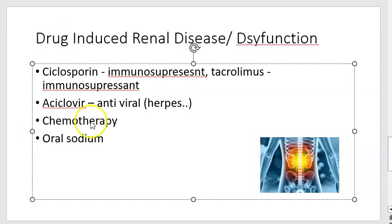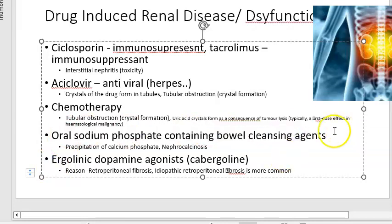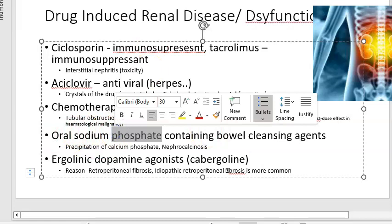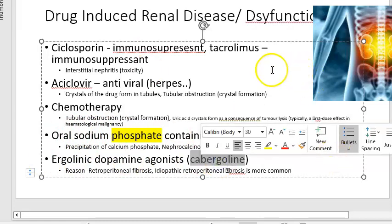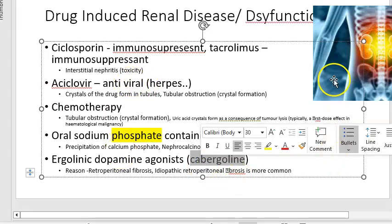Chemotherapy — referring here to cancer drugs — can cause tumor lysis, leading to kidney damage. Then oral sodium phosphate-containing bowel cleansing agents are also harmful, with the phosphate being the problem. Finally, cabergoline is given when you want to suppress breast milk production — for example, after a stillbirth — by reducing excess prolactin.